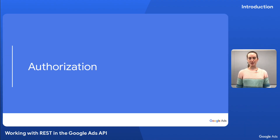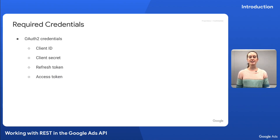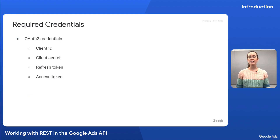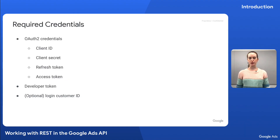In order to access the API using REST, we need to first prepare OAuth 2 credentials — that is, a client ID, client secret, refresh token, and access token. I'll go into more detail on authorization with REST in a later episode, but you can also check out our developer series on authentication, linked in the video description, for a better understanding on how to set up and make use of OAuth credentials for API access. Note that OAuth credentials are needed regardless of how you access the API. Besides our OAuth credentials, we'll also need a developer token and optionally a login customer ID to indicate the Google Ads customer ID of the manager making the API call.